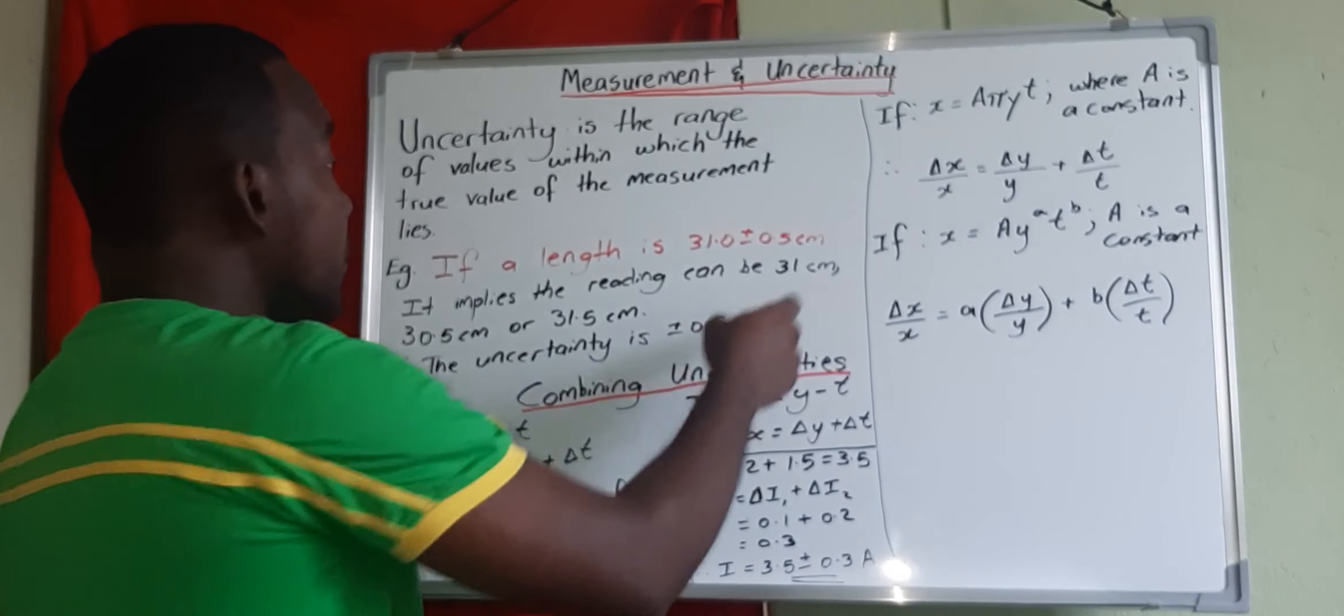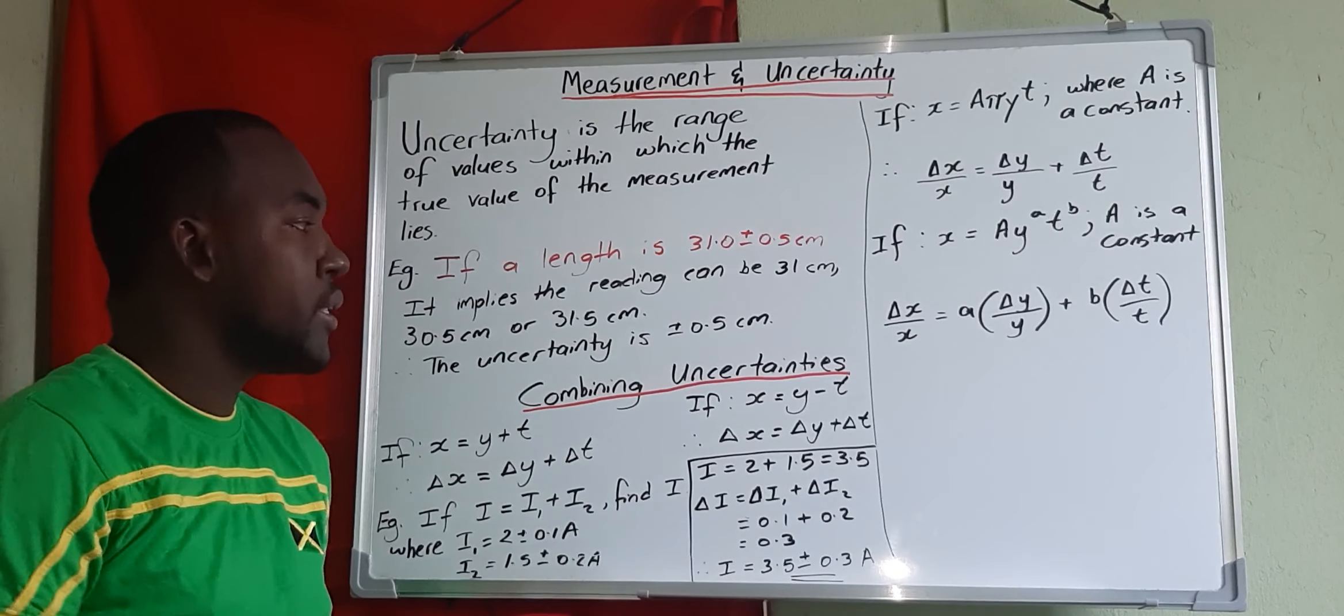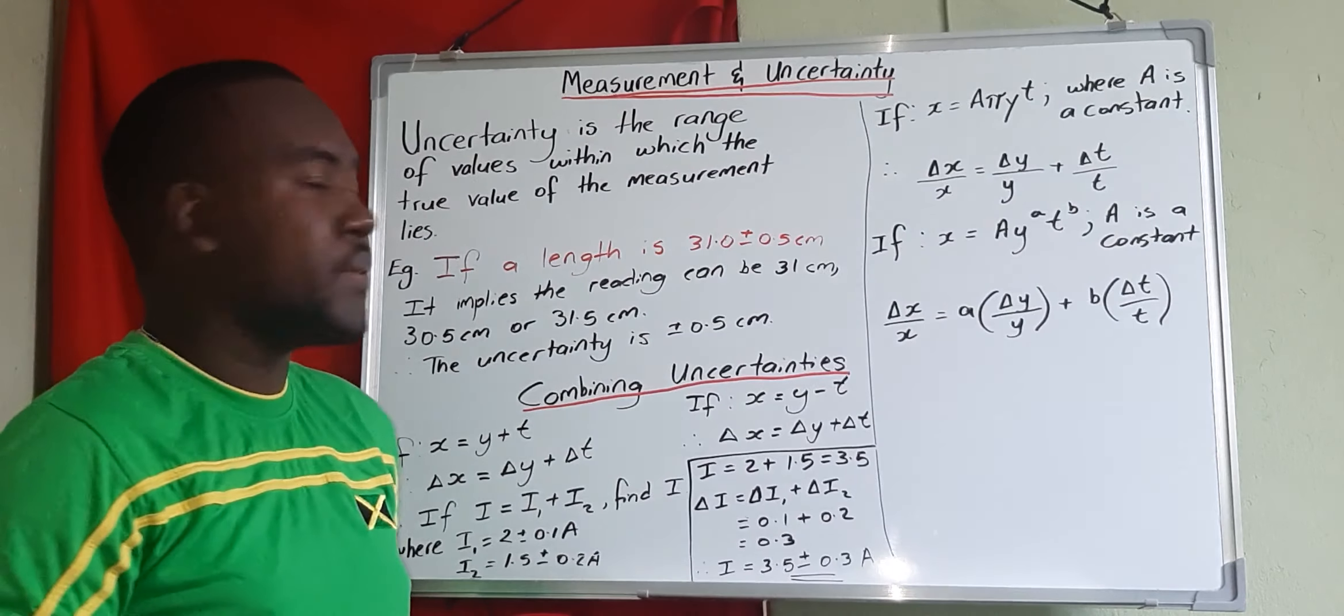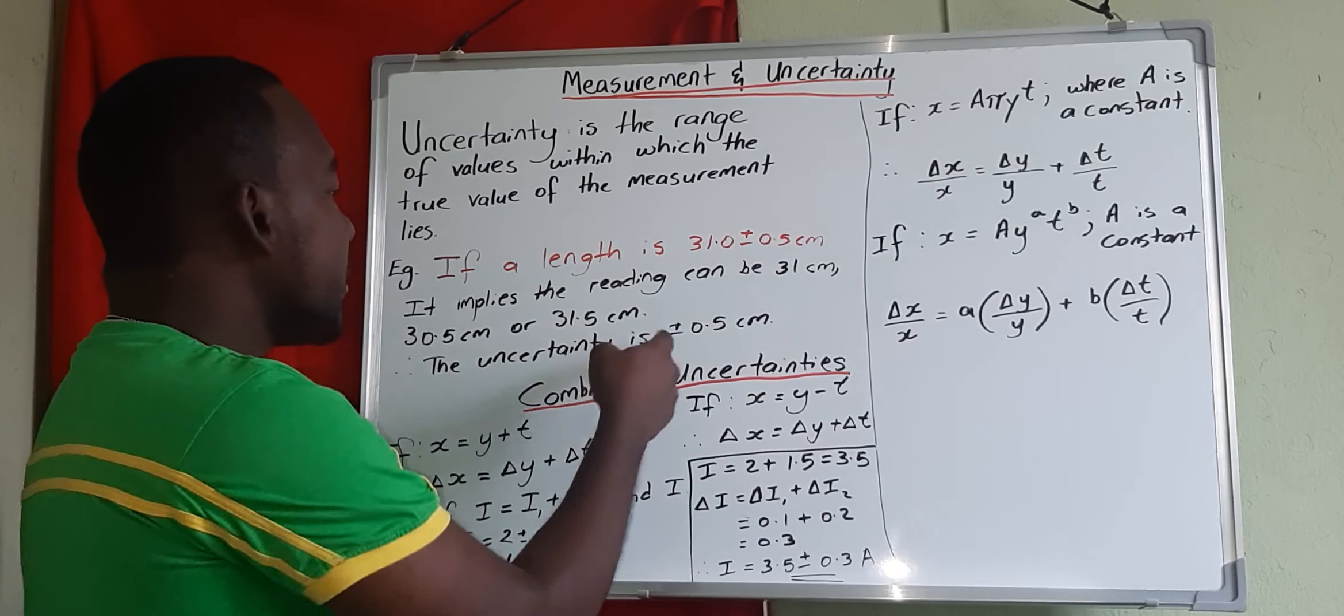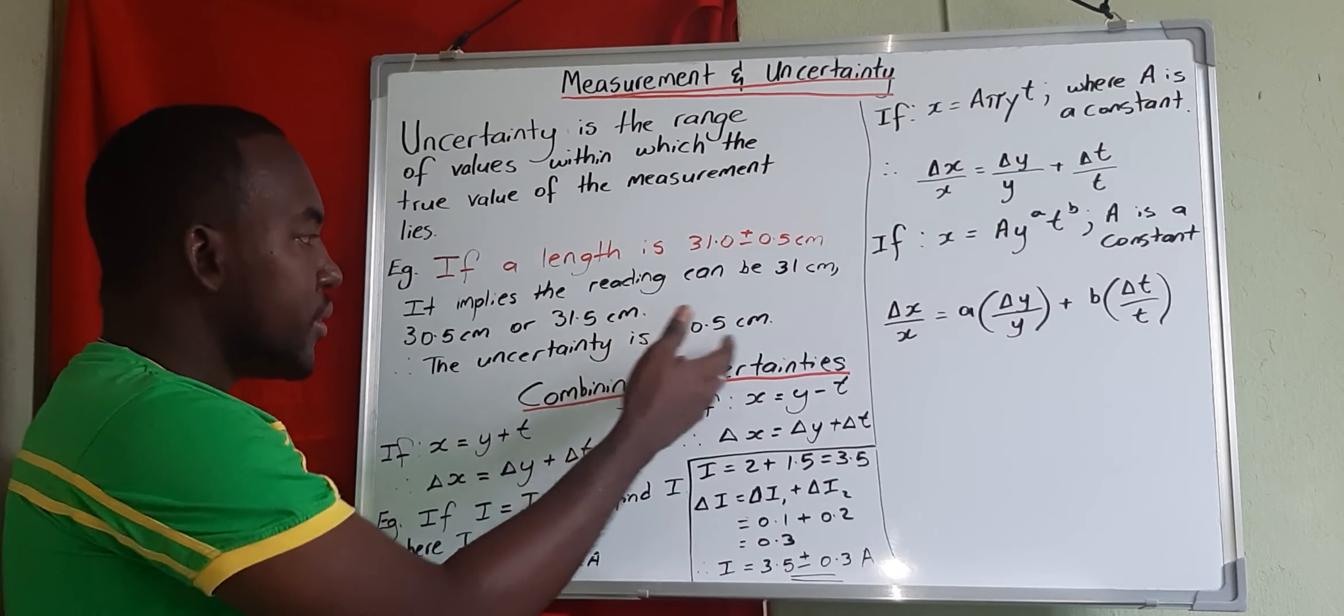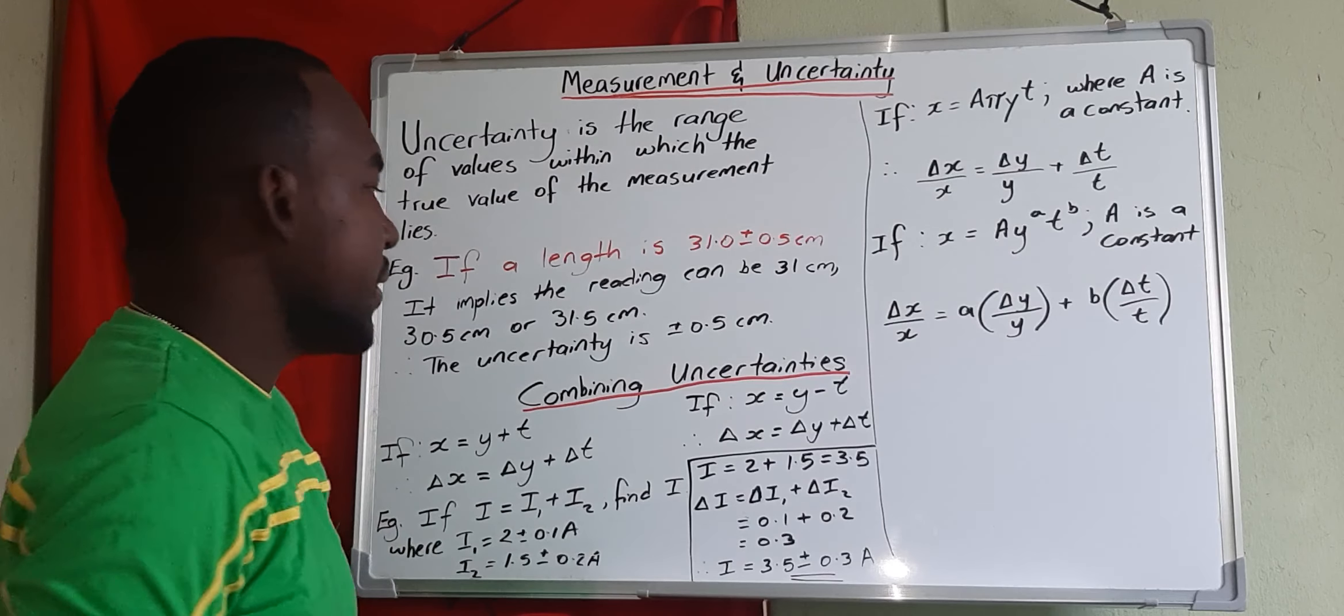Therefore from this statement we know that the 0.5 is our uncertainty. We always include our uncertainty by writing plus or minus the smallest division on your measuring instrument.